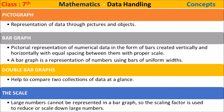A pictograph is the representation of data through pictures and objects. A bar graph is the pictorial representation of numerical data in the form of bars created vertically and horizontally, with equal spacing between them and a proper scale. A bar graph is a representation of numbers using bars of uniform widths.